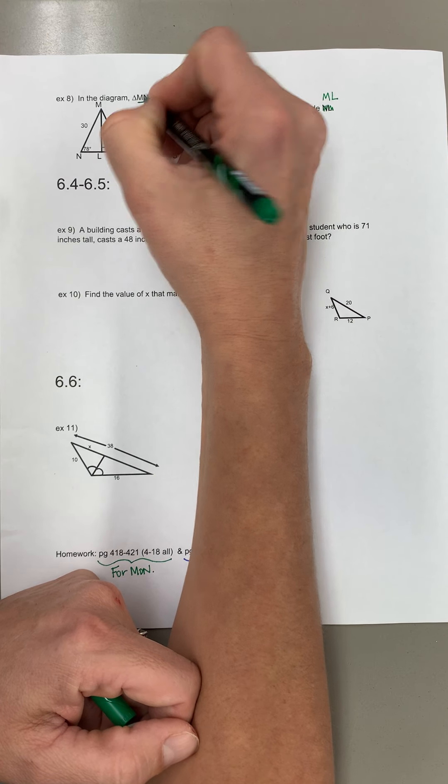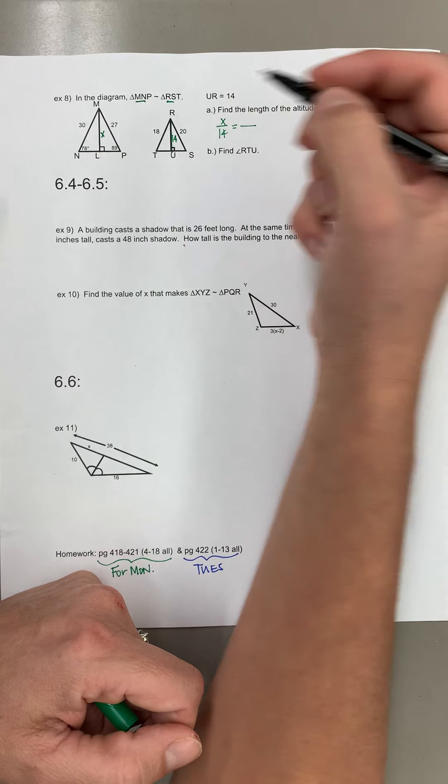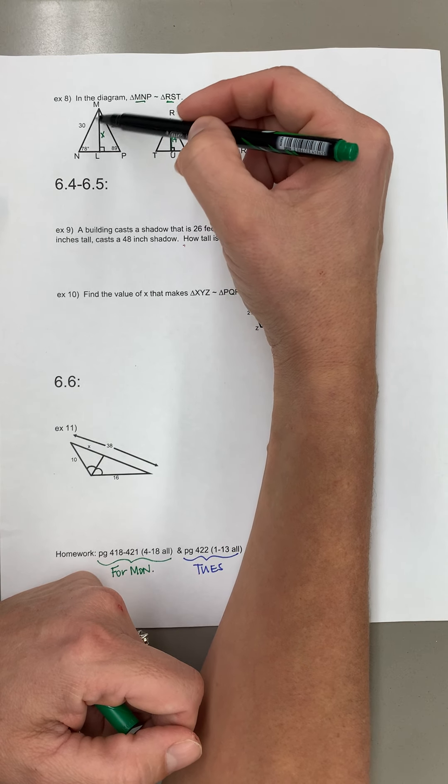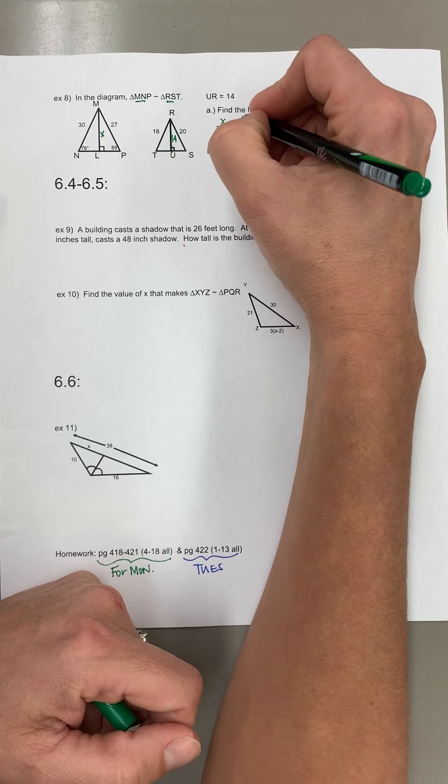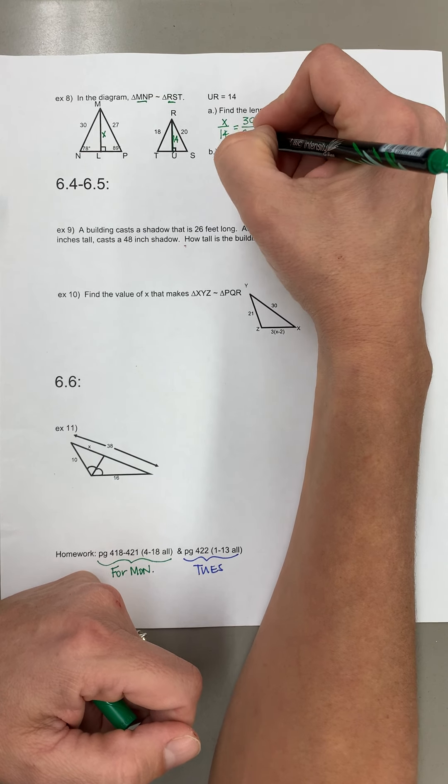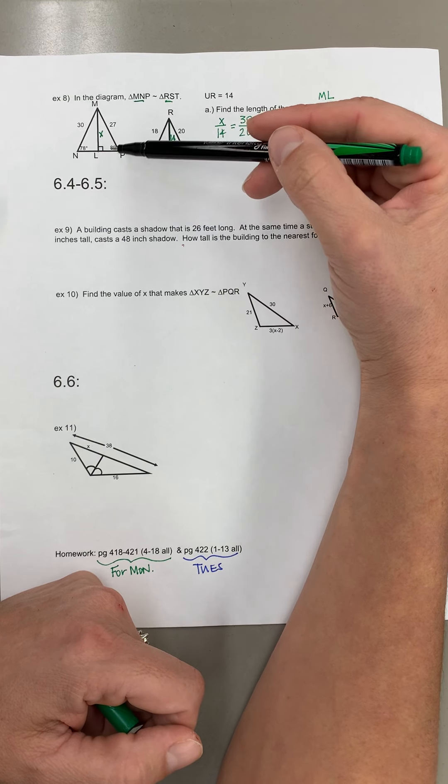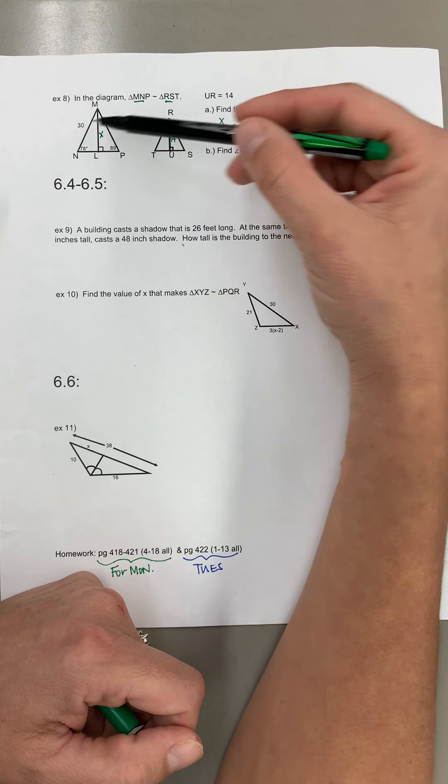And again that's because MN is in the same spot as RS which is over here. So in the X triangle 30 is my MN and then again that should go with RS which is 20. So careful there, even though the drawing kind of looks like it should be 30 and 18, it's actually 30 and 20.